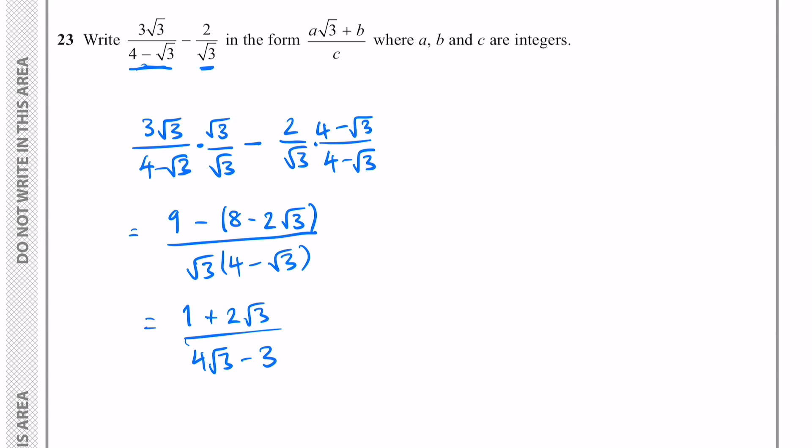So far so good, but we still need it in the form where there's only an integer on the bottom. What we need to do now is something called rationalizing the denominator, and when we have an expression like this where there's two terms with a surd, we multiply by the conjugate, which is just changing the sign in the middle of the expression.